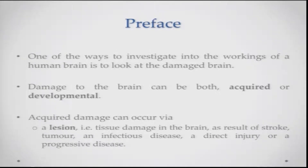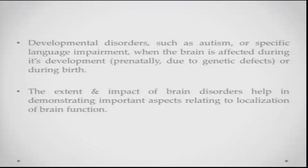One of the very nicest ways to look into the workings of the brain is when you can actually look into the disordered or damaged brain, because this tells you which parts of the brain are related to what kind of cognitive processes. You can deduce more clearly the link between specific brain areas and particular cognitive functions. These brain disorders can be both acquired or developmental. Acquired damage could occur because of a tumor, stroke, infectious disease, or direct injury to the brain.